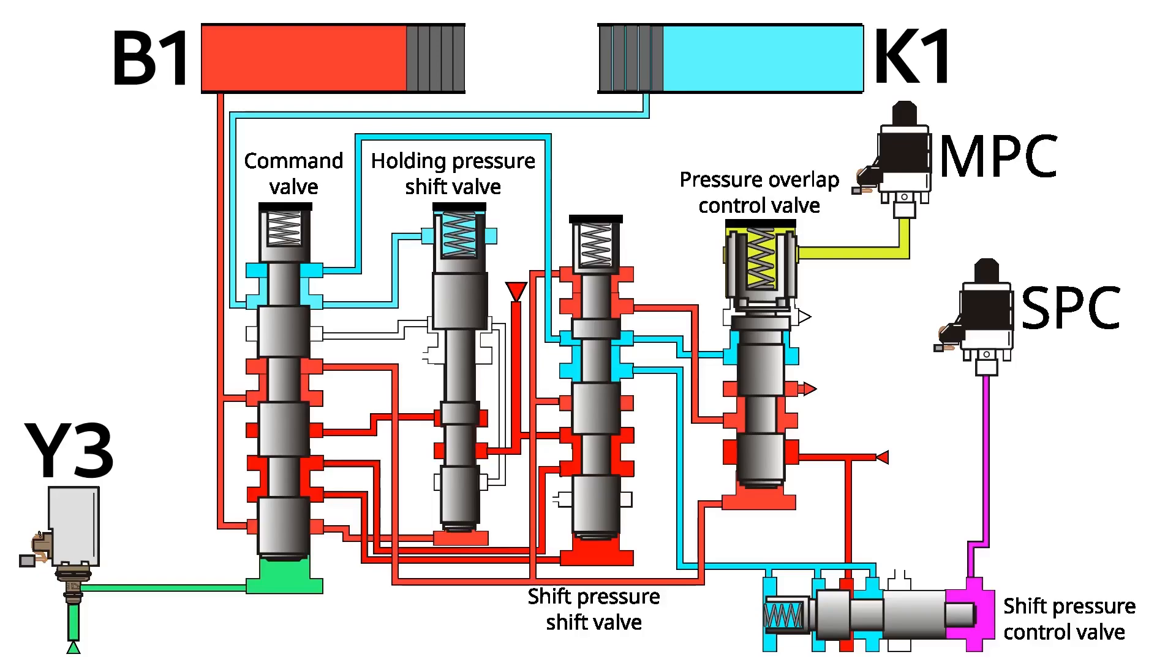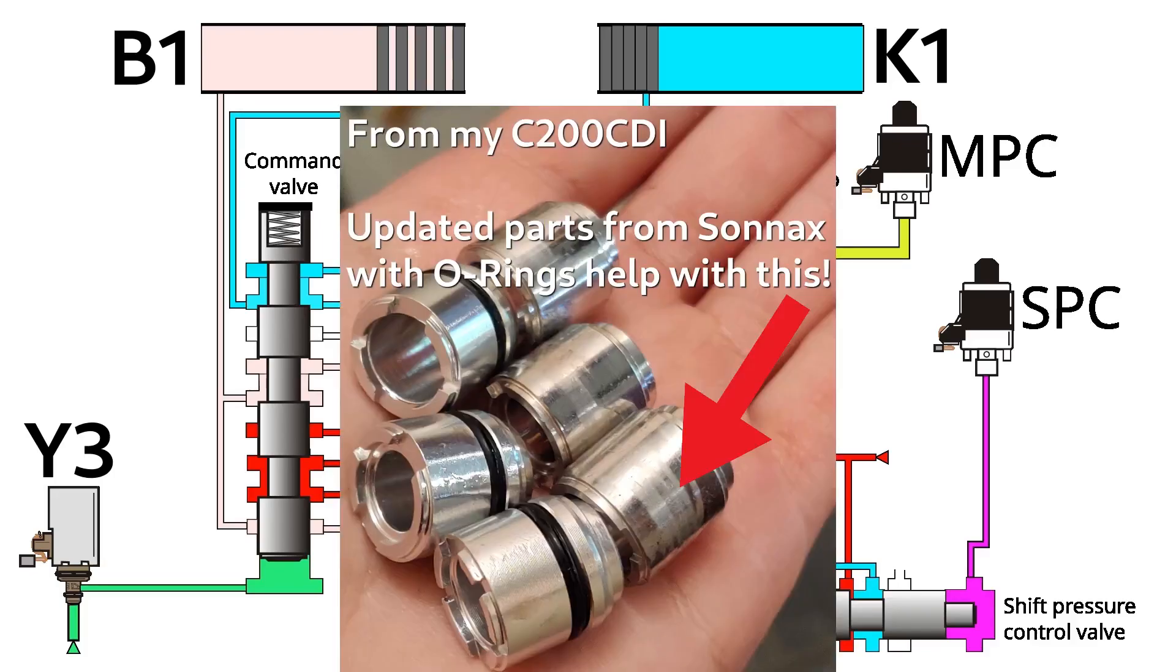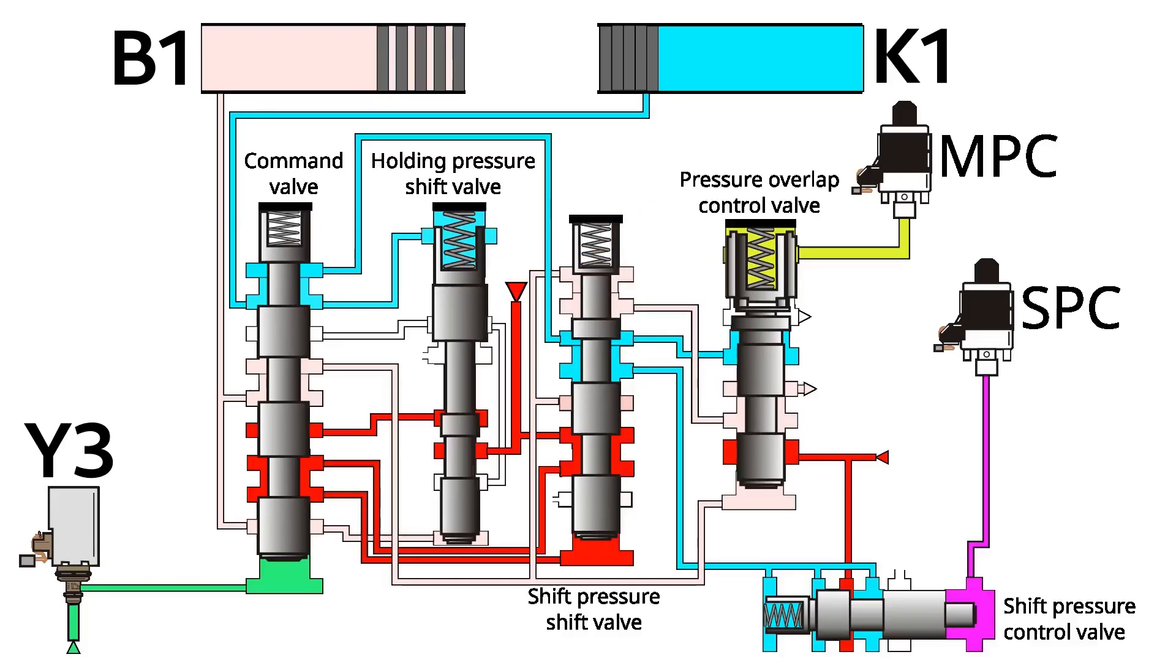Next, the overlap phase. In this part of the gear shift, the MPC solenoid relaxes pressure, whilst the SPC solenoid increases pressure. This creates a controlled release and application of pressure, thus a smooth transition between two clutches. The overlap valve here is responsible for controlling the disengagement of the B1 clutch group. This is the main reason for common flaring on this gearbox. When the overlap valve has score marks on it, it allows MPC pressure to leak out of this valve, which causes the old clutch group to be released too quickly, before the new clutch groups are fully applied. This creates a temporary neutral state in the gearbox where no clutches are applied, thus creating a flare.